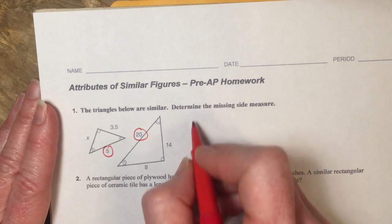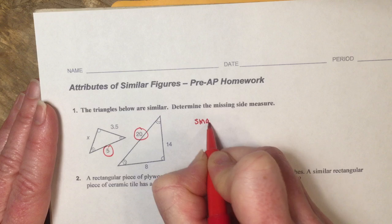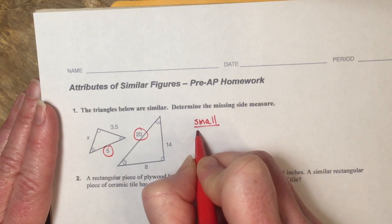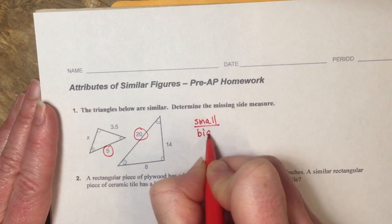So I'm going to go ahead and set this up as the small triangle and compare it to the big triangle. My first ratio is going to be 5, and it corresponds to the 20. So and then the second triangle, I know I need to solve for x, so I need to use that, and then I need to look for which side corresponds.